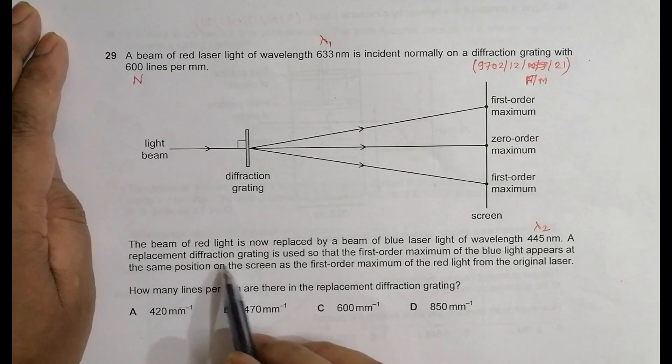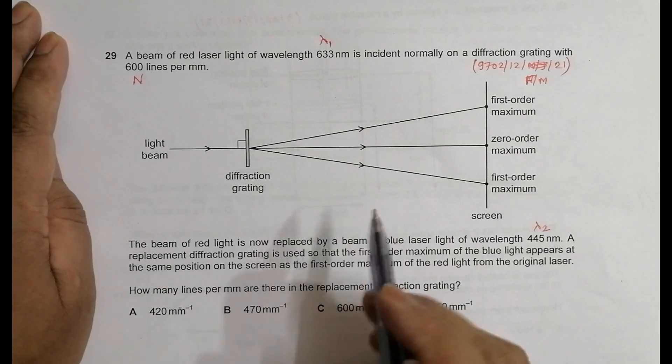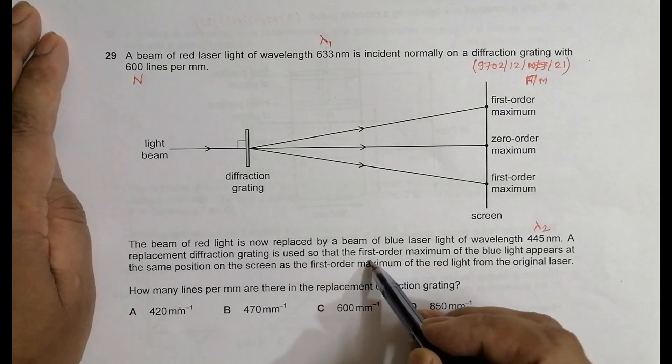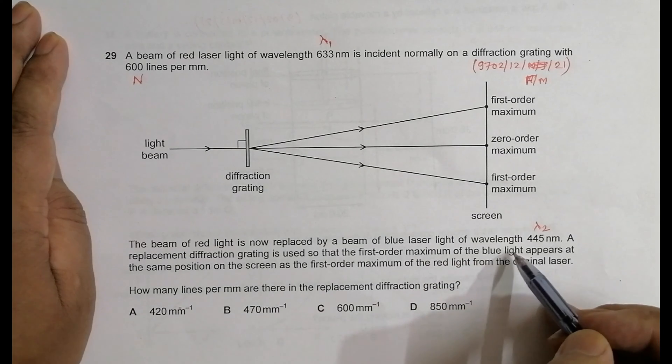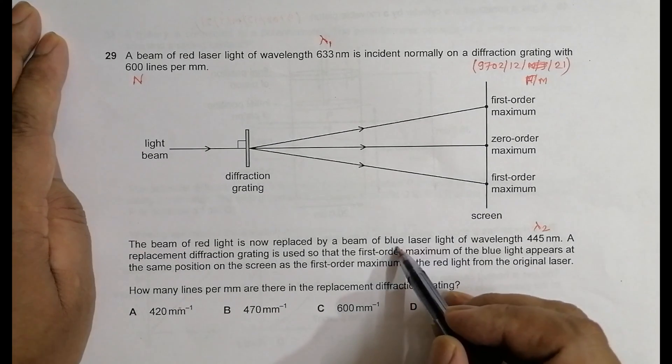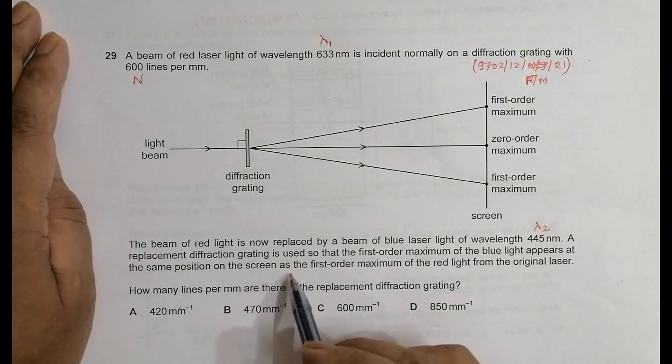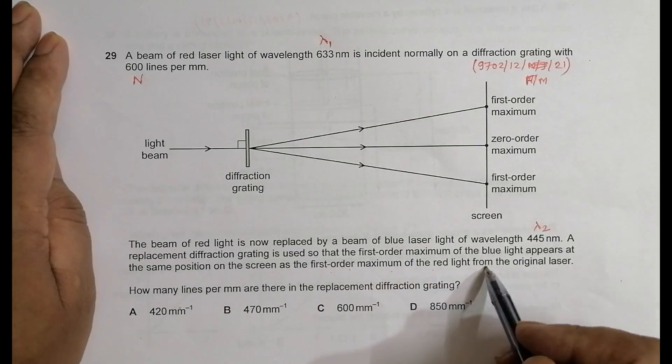A replacement diffraction grating is used, so first we change the light frequency and then we change the grating, so that the first order maximum of the blue light appears at the same position on the screen as the first order maximum of the red light.